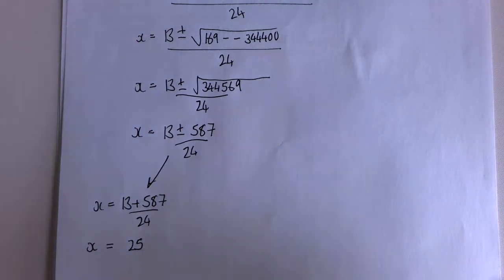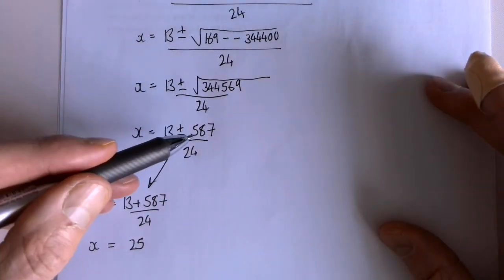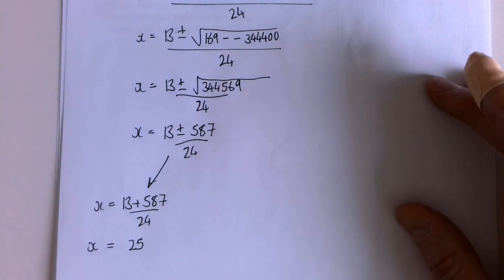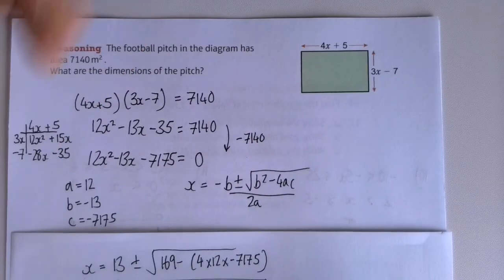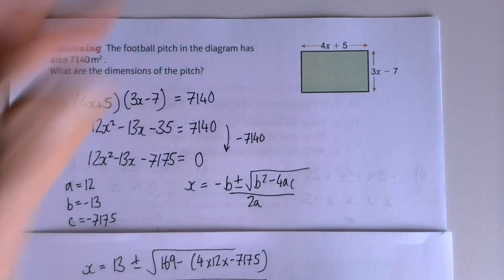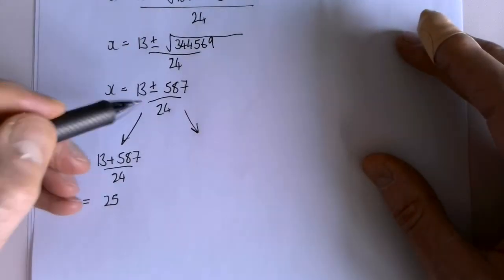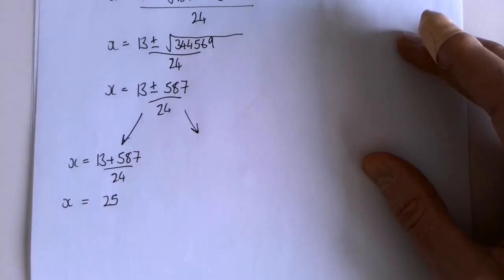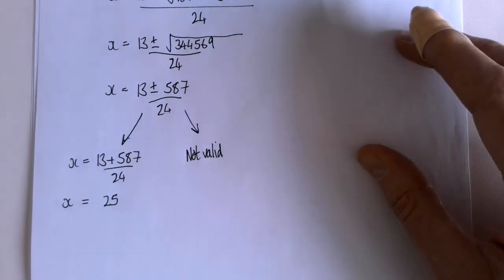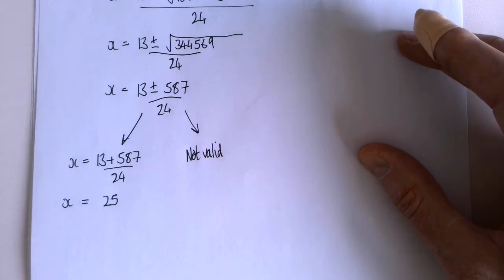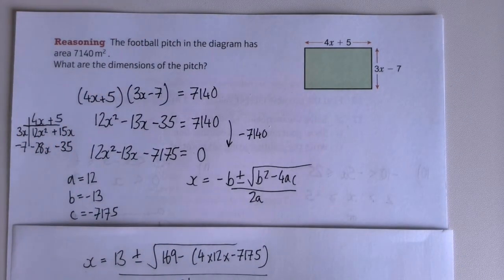You might think I'm being lazy because I've only done (13 + 587) / 24. Can you decide why I didn't bother with (13 - 587) / 24? Remember what x represents - it's involved in the calculation of the length and width of this football pitch. If I did 13 minus 587 divided by 24 that's going to be a negative answer, and the length of a football pitch can't be negative. Just like the previous question, one of the two answers isn't valid - it doesn't mean I've made a mistake, it just means that answer is nonsense.